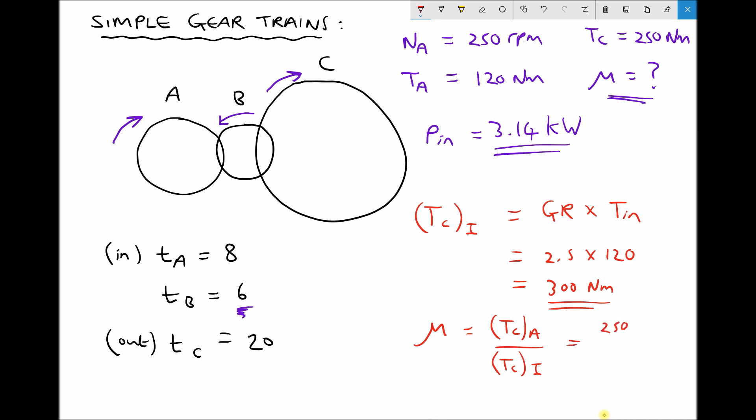So 250 over 300. We then multiply that by 100 to give us an answer as a percentage and that comes out to be 83.3.